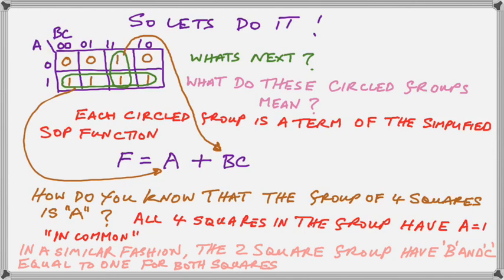In a similar fashion, the two-square group have B and C equal to one for both squares. Can you see that? If not, take a closer look at the Karnaugh map.